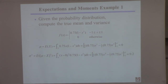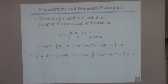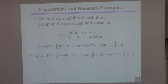The true mean of this distribution is 0. To calculate the variance, take the probability function, multiply it by (x minus mu) squared — where mu equals 0 — and integrate between minus 1 and 1. Evaluating the limits, this distribution has a variance of 0.2.